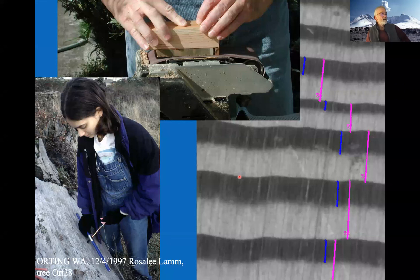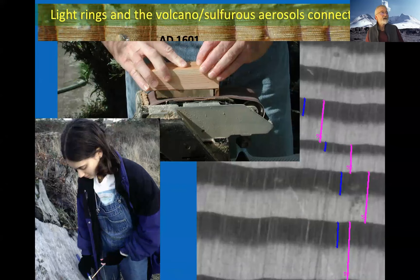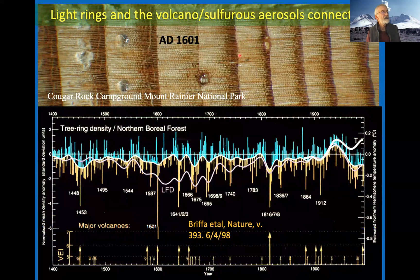You have to collect the sample—as Lee Lam is doing in this picture; she was a student at Capitol High School in Olympia interning with me in the late 1990s, went on to get her master's in physics from MIT, and is now teaching in Maine. Then you sand and polish samples to at least 2,000-grit sandpaper and measure them using image analysis, developing a numerical dataset for cross-dating.